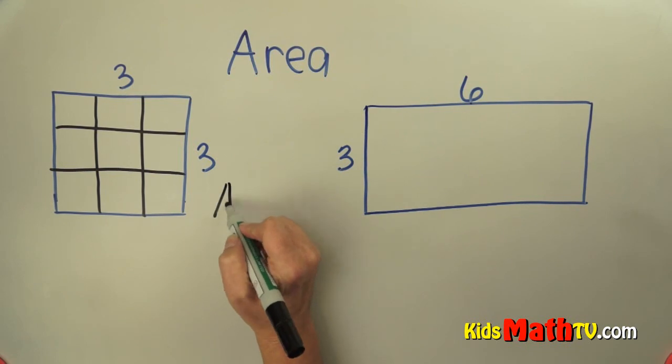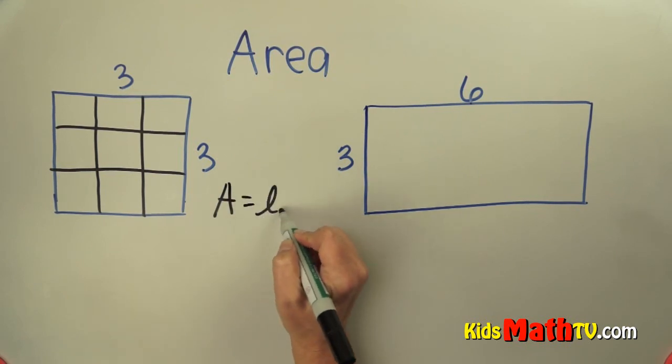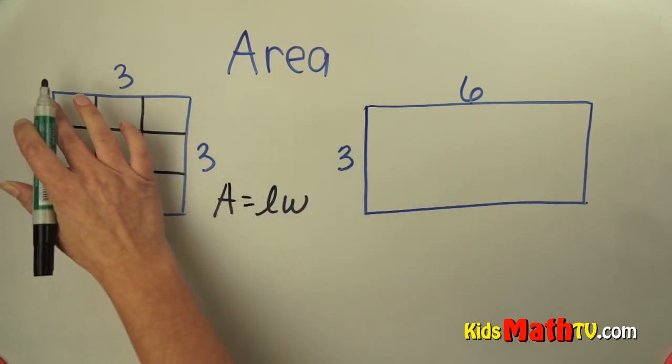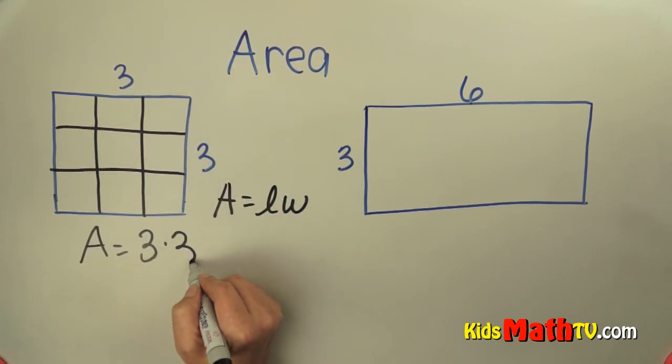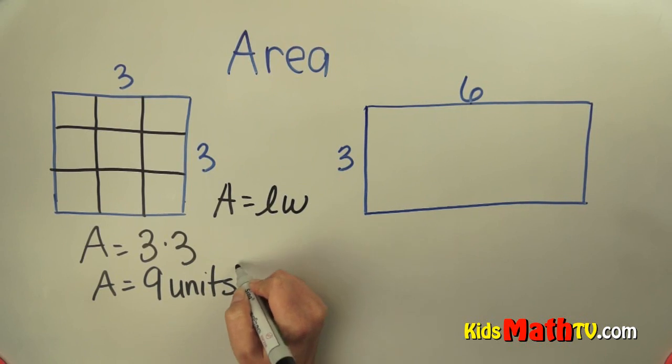We have a formula. Area equals the length times the width. So the length times the width. Area equals three times three. And the area equals nine units. They're square units, or nine square units.